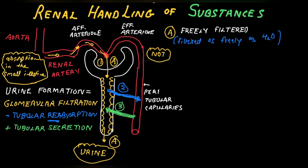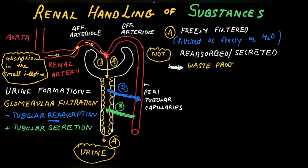These substances are not reabsorbed or secreted — neither reabsorbed from the tubular lumen across the epithelial cell into the peritubular capillaries, nor secreted from the peritubular capillaries into the tubular lumen. These are all waste products like urea, creatinine, and uric acid.